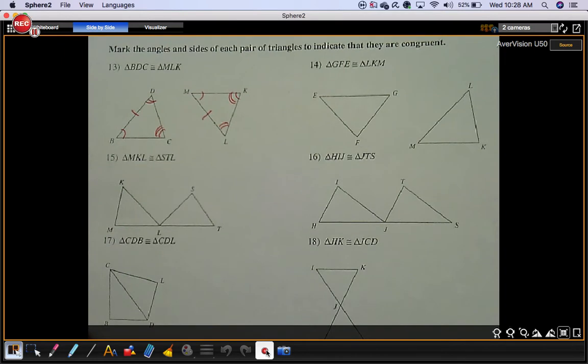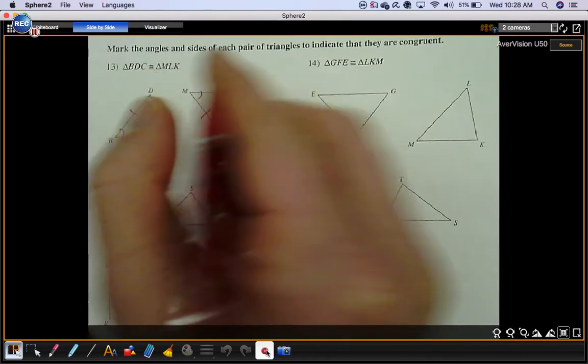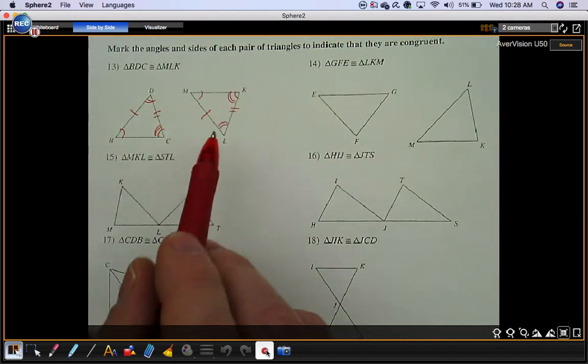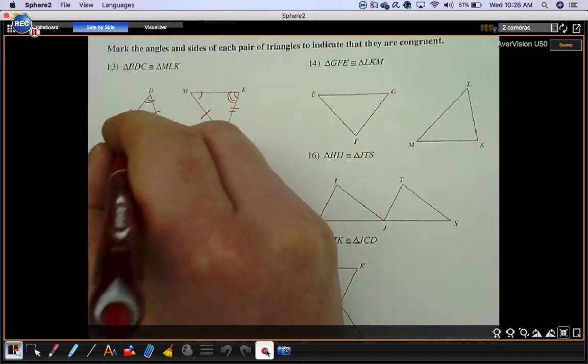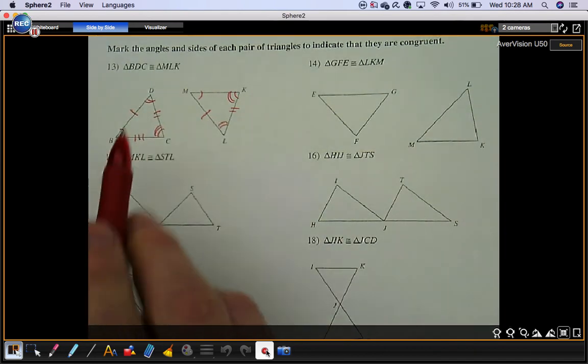Matching marks. Segment DC goes with segment LK. Matching marks. Segment BC goes with segment MK.